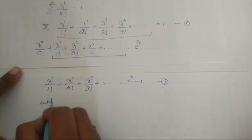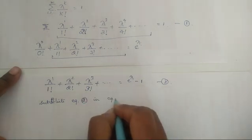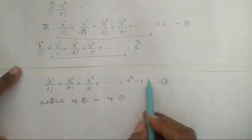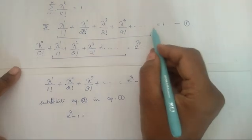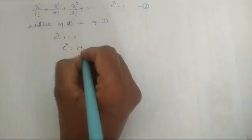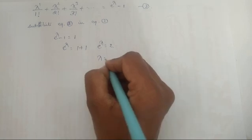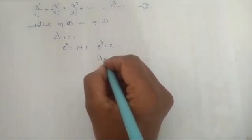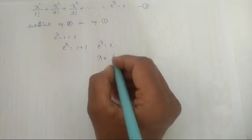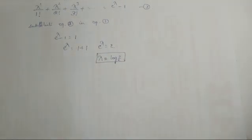Substituting equation 2 into equation 1: e^λ − 1 = 1, so e^λ = 2. Taking the natural logarithm of both sides, λ = log 2 to the base e. So we have found the value of λ as ln 2.